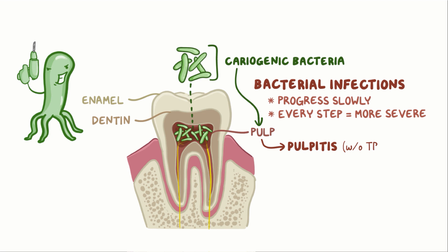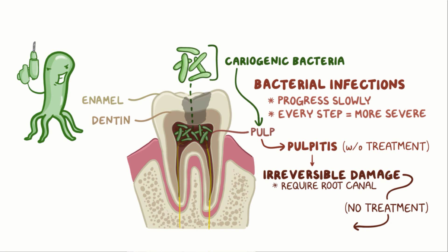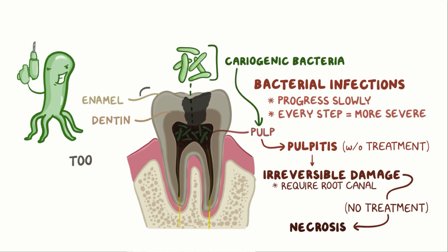Without immediate treatment, pulpitis can cause irreversible damage and require a root canal. If no treatment is performed, the pulp will eventually die off through necrosis. At that point, the tooth is considered dead, and in essence, it becomes a staging area for bacteria to spread further.